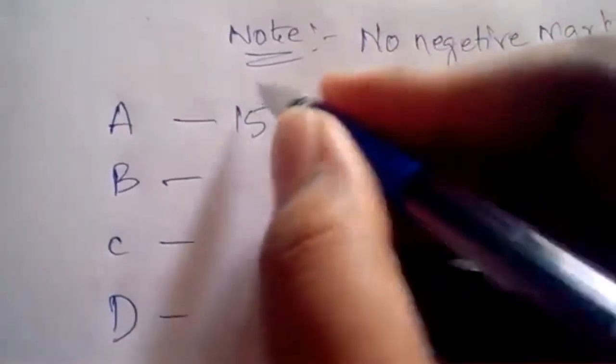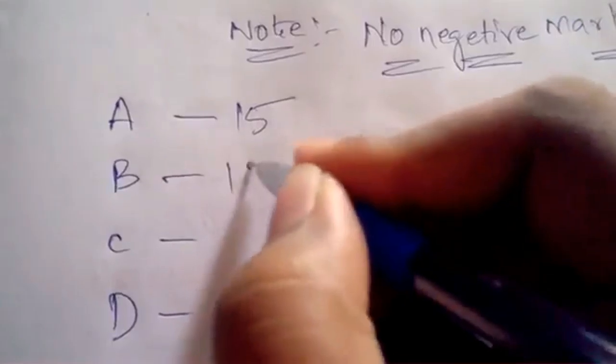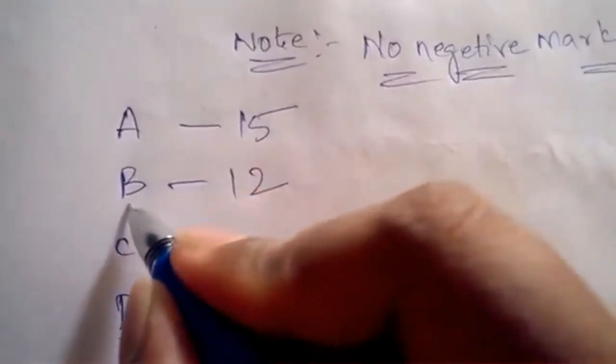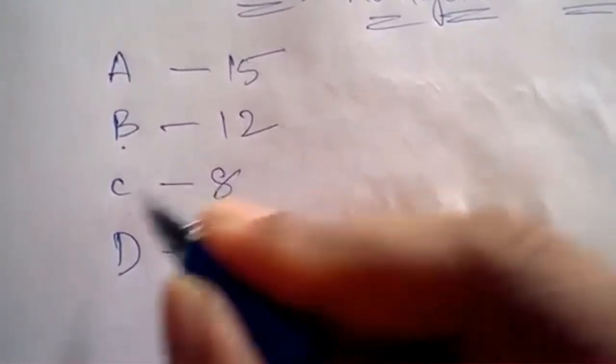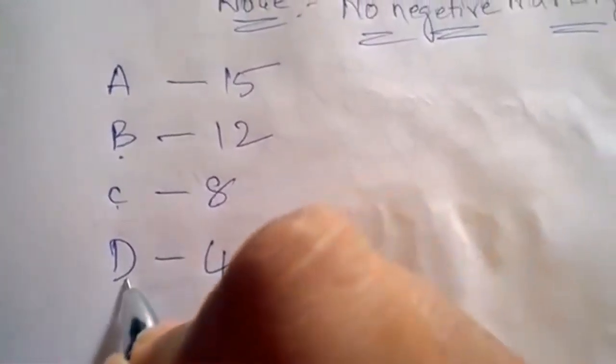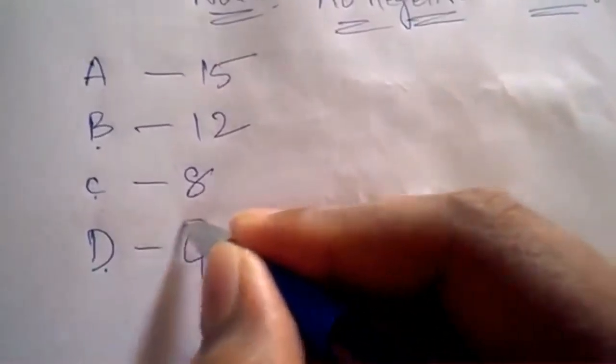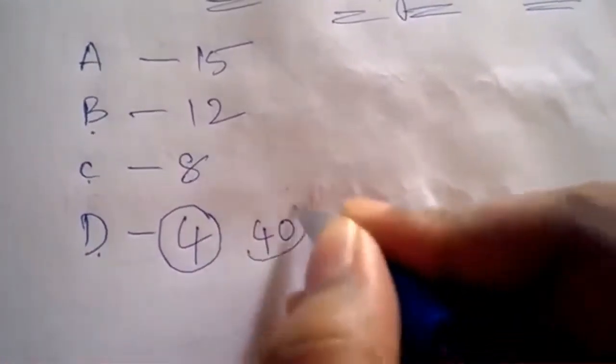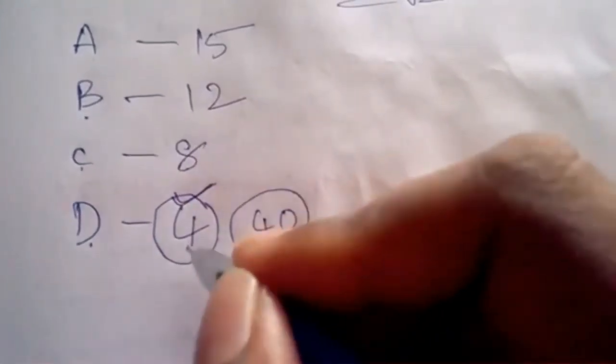If you answered A options as 15, like 15 of the answers which you marked have A option, 12 of the options you marked with B, 8 of the options you answered C, and only 4 options you answered D. So now the technique - listen carefully. In the available options, this is the least option which you answered.